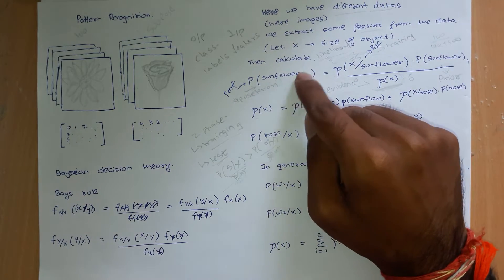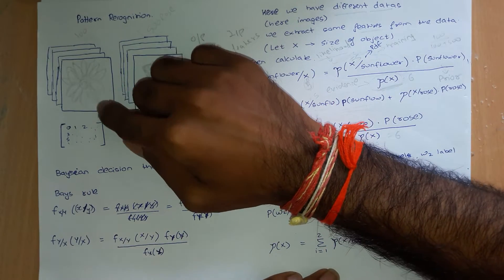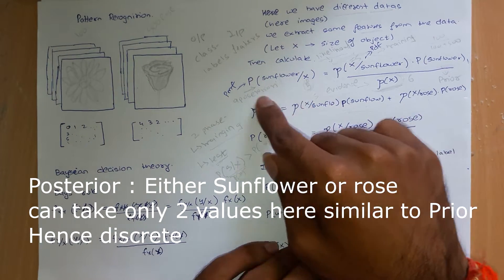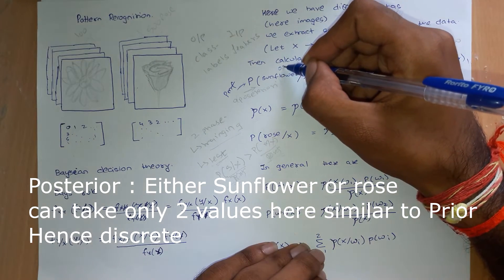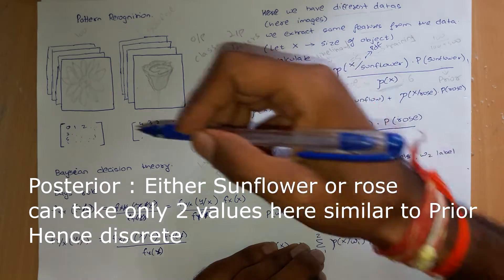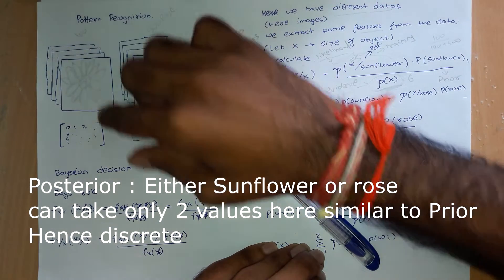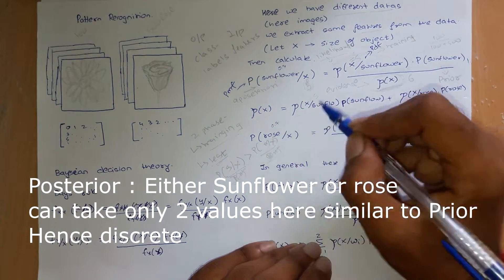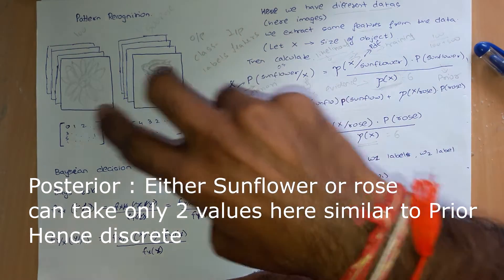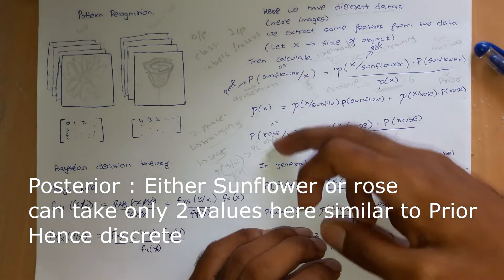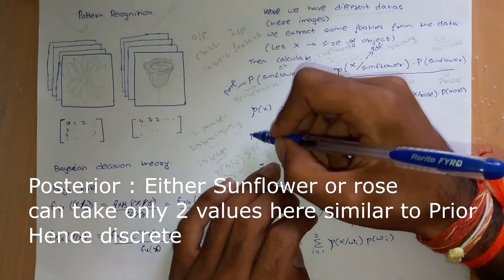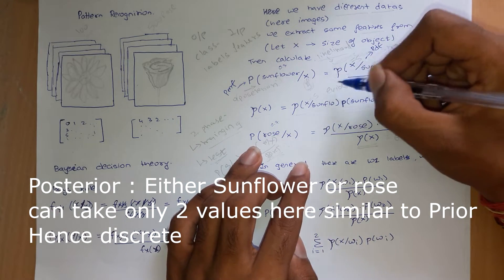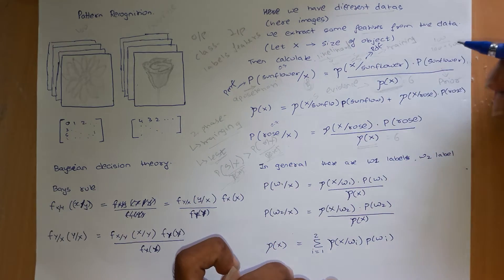Similarly, the posterior — probability of sunflower given a value of X — is also discrete. Given a certain size X, what is the probability that it is a sunflower? Say this comes to be 0.3, so the probability of rose given that distance is 2 would be 0.7, because we are considering only two outputs. So this is a PMF. Both posteriors are PMFs. The likelihood is a probability density function — continuous. Priors are mass functions again.